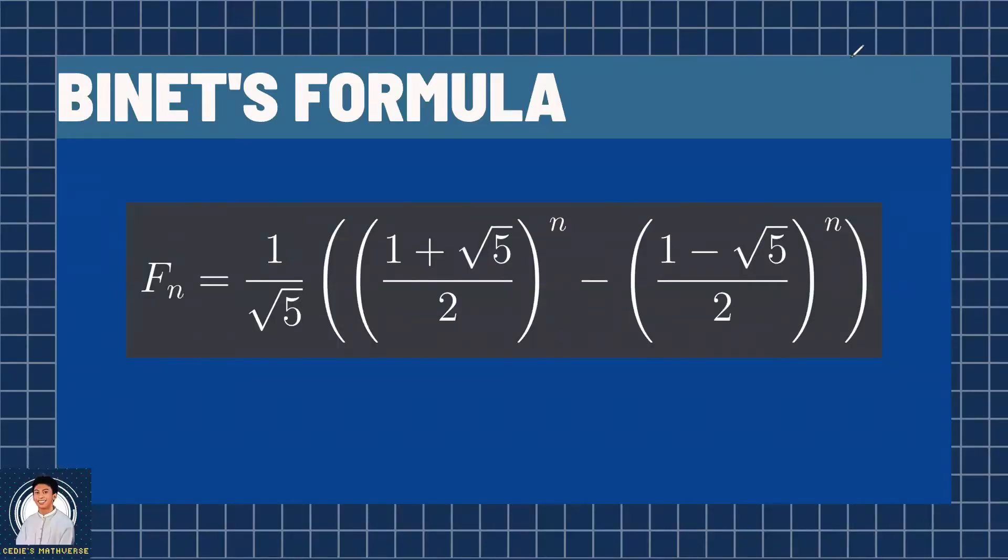As we can see here, we got F sub n is equal to 1 over square root of 5 multiplied by quantity 1 plus square root of 5 all over 2 raised to the n power minus quantity 1 minus square root of 5 all over 2 raised to the n power. This formula is pretty complicated, right? Where do we get this? How do we have the golden ratio here? We will find out later, but let's see if this formula works first.